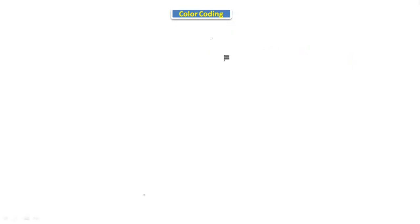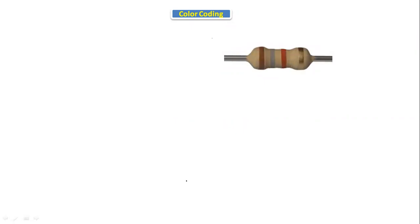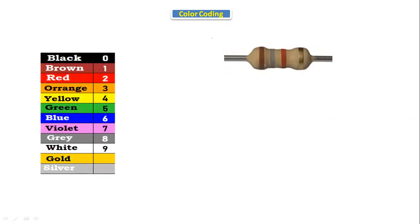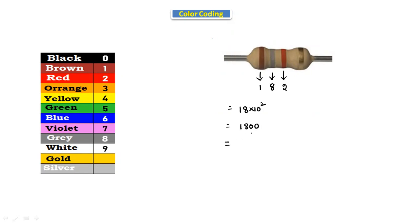Let's take one more resistor with brown, gray, and red color bands. Brown indicates 1, gray indicates 8, and red is the multiplier 10^2. Applying the formula: 18 × 10^2 = 1800 ohms. Converting to kilo ohms, we get 1.8 kilo ohms. The resistor with brown, gray, red has a value of 1.8 kilo ohms.